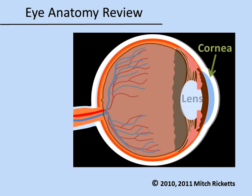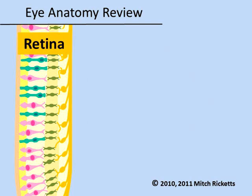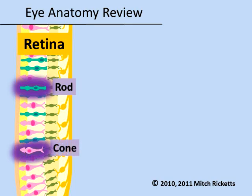The cornea and lens bend light rays to focus images on the retina. When light strikes the retina, photoreceptors generate nerve impulses, which are sent to the brain to be interpreted as visual images. The photoreceptors in the retina include rods and cones. Rods are very sensitive to many wavelengths of light. Cones are less sensitive and help us see in color.